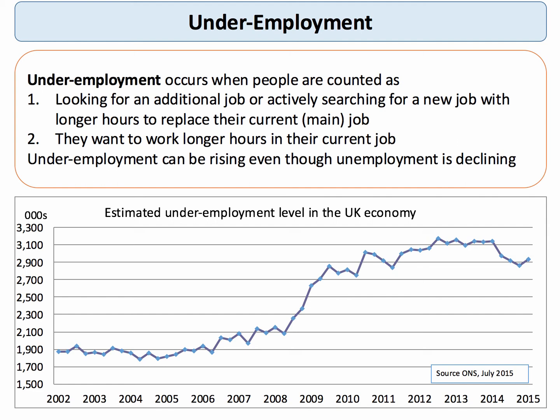Nobody can be precisely sure what the level of underemployment is. The ONS do publish the data, and in 2015 they reckon underemployment was just under three million people. So though unemployment has been falling quite sharply, underemployment has been increasing — around three million people are looking for an extra job or want to work longer hours in their existing occupation.